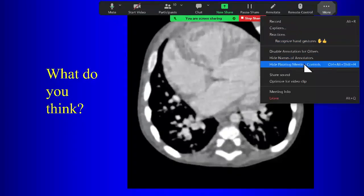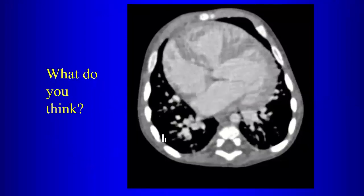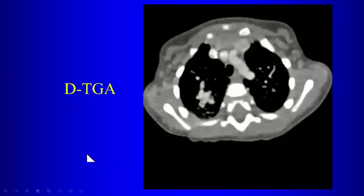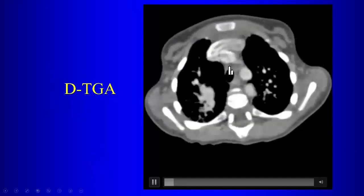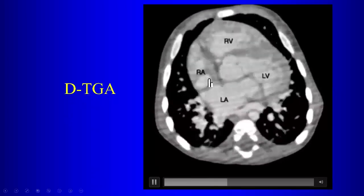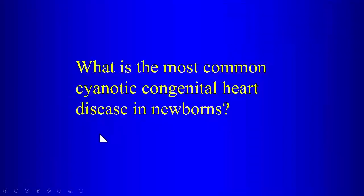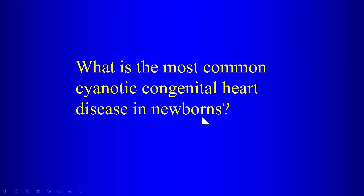D-transposition is the most common cyanotic congenital heart disease in the newborn. With D-transposition, we have atrioventricular concordance but ventricular arterial discordance: the aorta connects to the right ventricle and the pulmonary artery to the left ventricle. Whenever you hear the word transposition, translate it mentally as ventricular arterial discordance — the morphologic right ventricle attached to the aorta, morphologic left ventricle to the pulmonary artery.